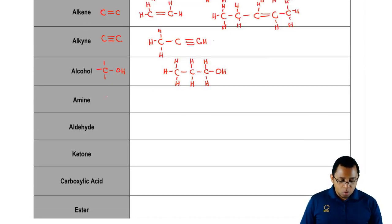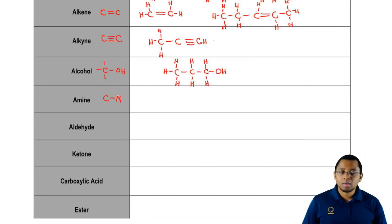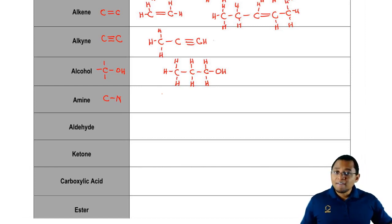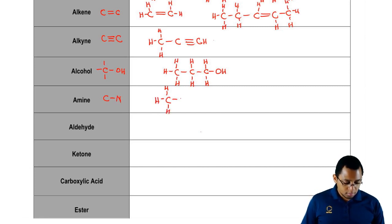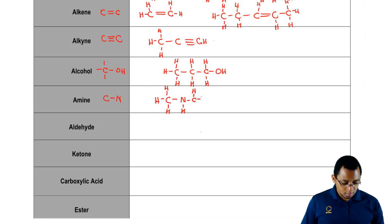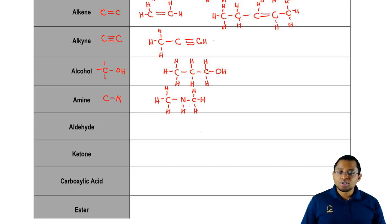An amine is when we have at least one carbon single bonded to a nitrogen. We need at least one carbon single bonded to a nitrogen. We can have more than one carbon — two, three, or even four carbons connected to that nitrogen — but as long as there's at least one, it counts. In this example, the nitrogen is connected to two carbons, single bonded to two carbons — it's still an amine.